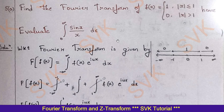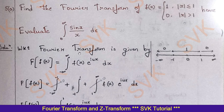For the module question paper 1, consider question number 5a: Find the Fourier transform of f(x) = 1 for |x| ≤ 1, and 0 for |x| > 1. Hence evaluate the integral from 0 to infinity of sin(x)/x, which is one of the important problems. We require to find the Fourier transform. So f(u) is equal to the integral from minus infinity to plus infinity of f(x) e^(iux) dx.